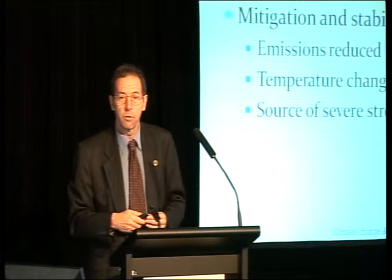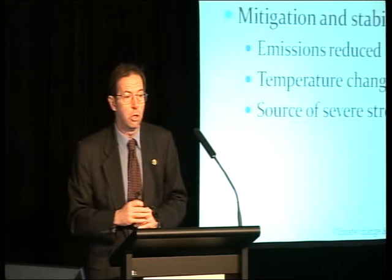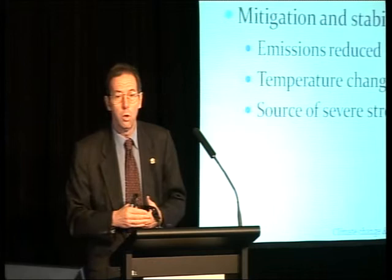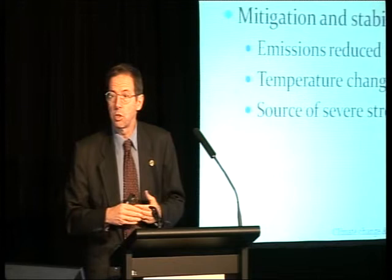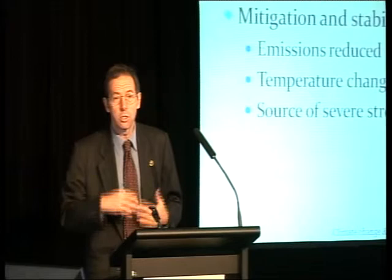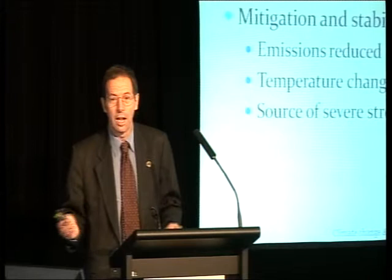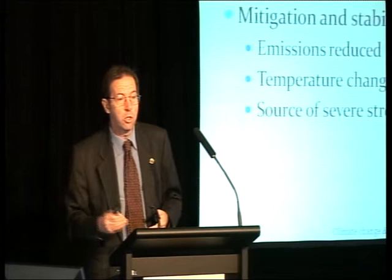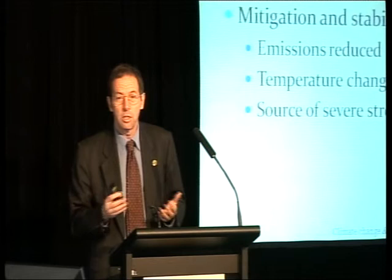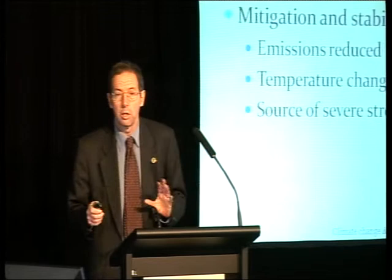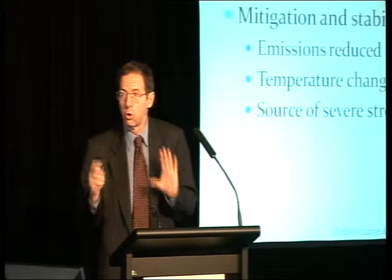I should briefly mention the economics of this. The nice feature of the story is all of this is incredibly affordable. A typical estimate would be that achieving this kind of goal, if we could all agree and achieve it in the most efficient way, would reduce the economic growth rate by 0.1 to 0.2 percentage points. It might mean that whereas on standard projections we might hope to double our income by sometime in the 2040s, on the most urgent approaches being considered it might take us till the 2050s to double our income instead. So it's consistent with steadily rising living standards, and that's crucial in terms of understanding the debate and framing issues of resilience.